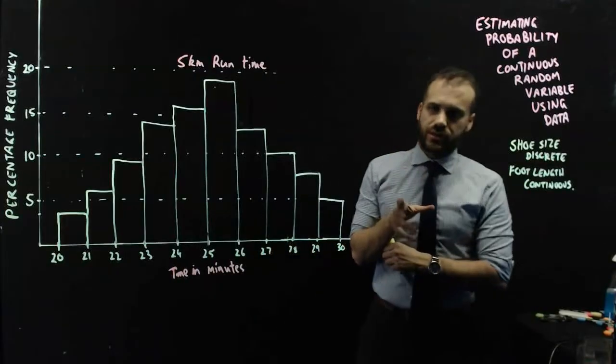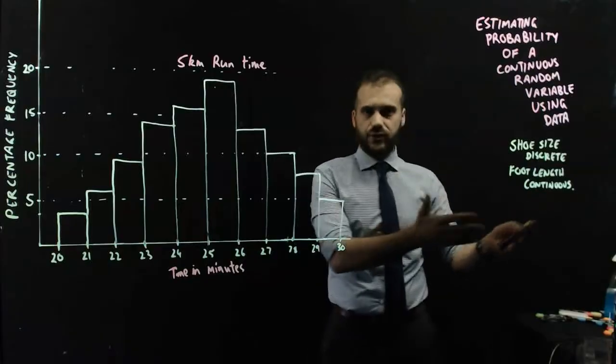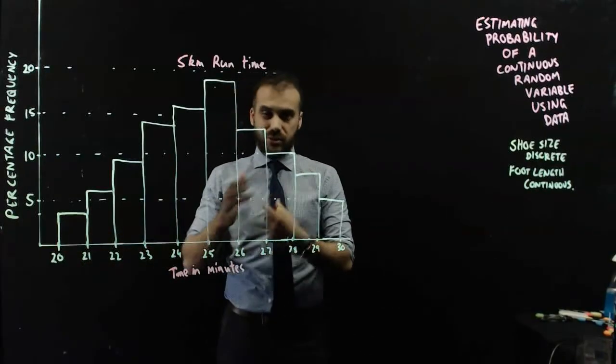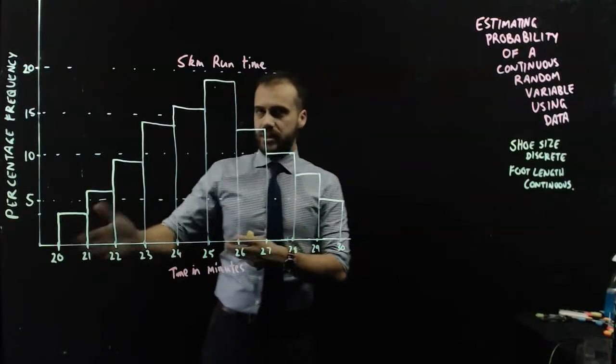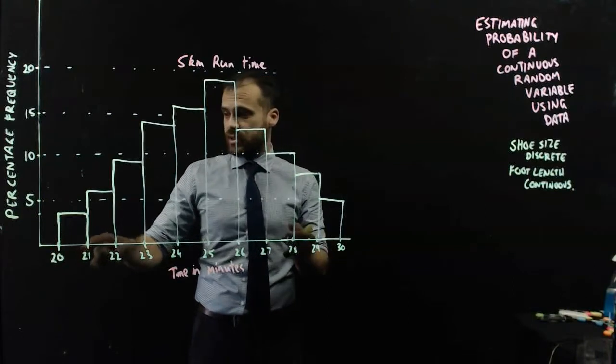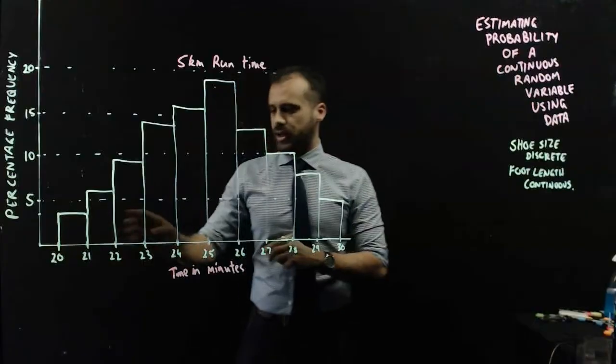Now, it's important to note at this point that this is continuous data. It's like a foot length here. Some students run 20.01 minutes for 5Ks. Some students run 20 minutes and 59 seconds. Both of those students would be in here.